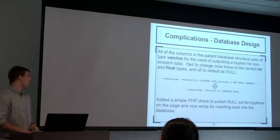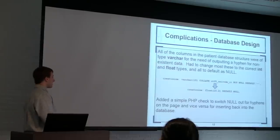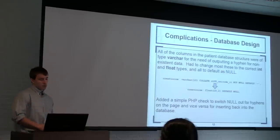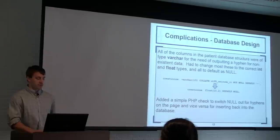As we see here with creatinine, we have the original one with a varchar with a default of hyphen, and then the new implementation has a default of null with a float with the correct precision type for this parameter. I added simple PHP checks to switch out null for hyphens and vice versa for inserting back into the database.